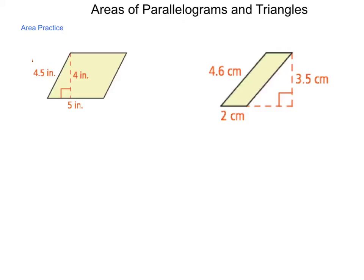For the first one we start by writing down our formula A equals b times h or area is base times height. So our area is going to equal the base, and we know we have this base height relationship so it's whichever two dimensions meet at a right angle.